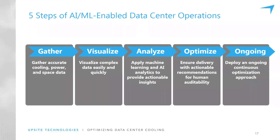Let's go into the steps and process that occur in this application. There are five key steps: gathering accurate cooling power and space data, making it quick and easy to visualize, applying the tools of analytics, doing the optimization, and then continuing this on an ongoing basis. Now we'll start to look at each of these in a little more detail.